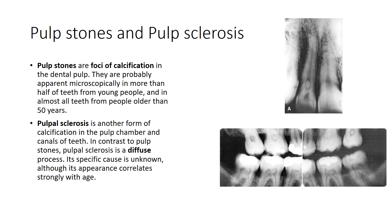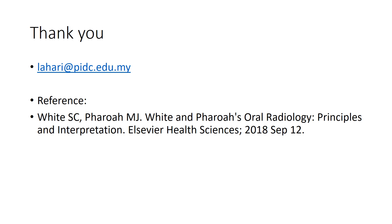Pulp stones are foci of calcification inside the dental pulp, apparent microscopically in more than half of teeth from young people and in almost all teeth from people older than 50. Pulp sclerosis is another more diffuse form of calcification of pulp chambers and canals; its specific cause is unknown, but it correlates strongly with age — the older the age group, the more likely they are to have pulp sclerosis. That brings us to the end of this chapter; please go through the radiology textbook reference for more information. Thank you.